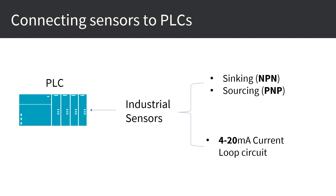After a couple of videos showing demos, I thought to go back and do some theory. In this video I'd like to give you an overview of two common circuits when working with industrial sensors and connecting them to a PLC within the industrial automation field. The two circuits I want to cover today are sinking and sourcing, and the 4 to 20 milliamps current loop circuit.